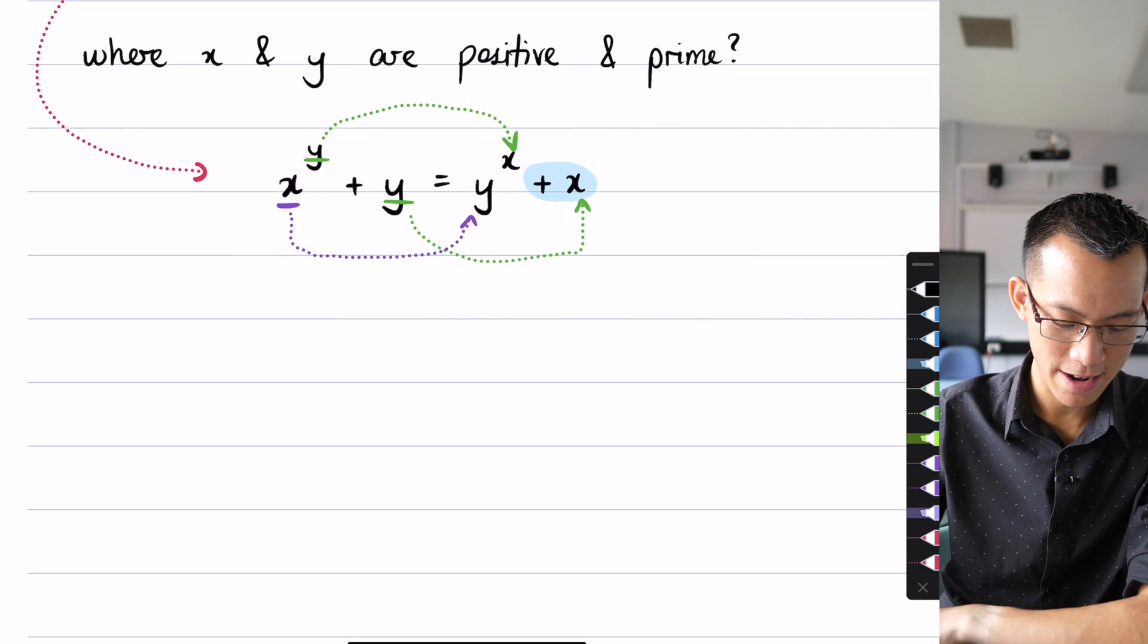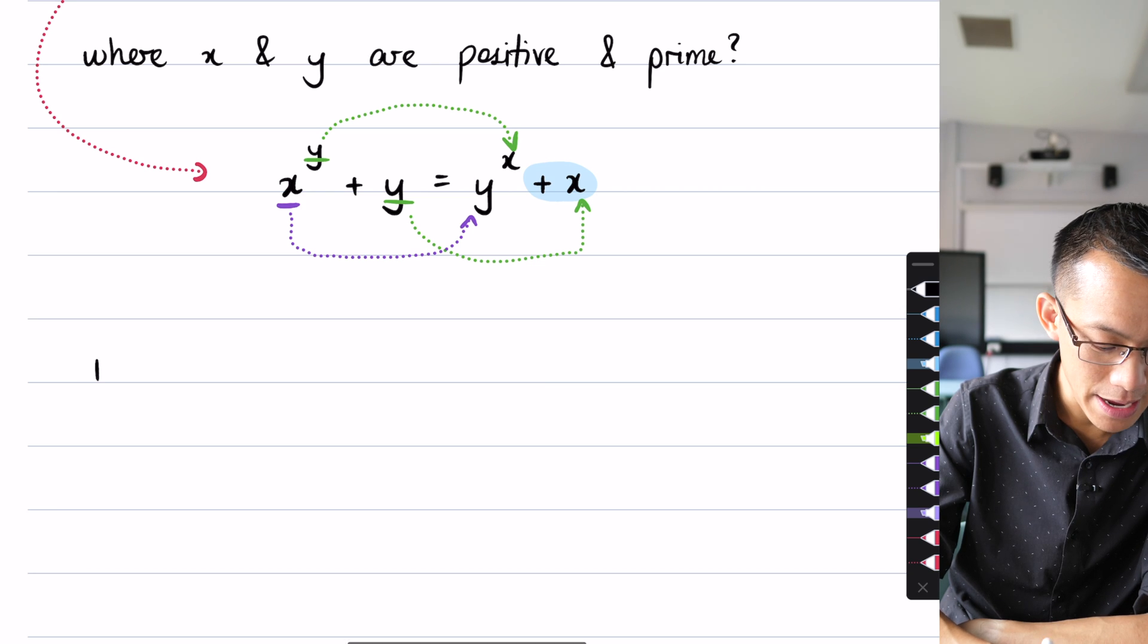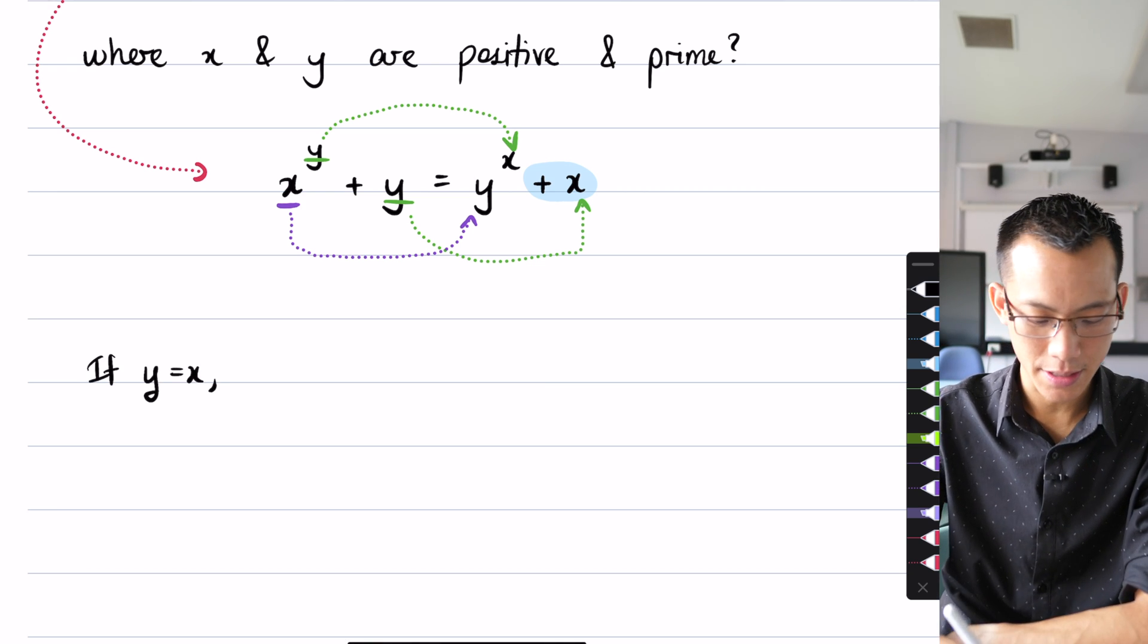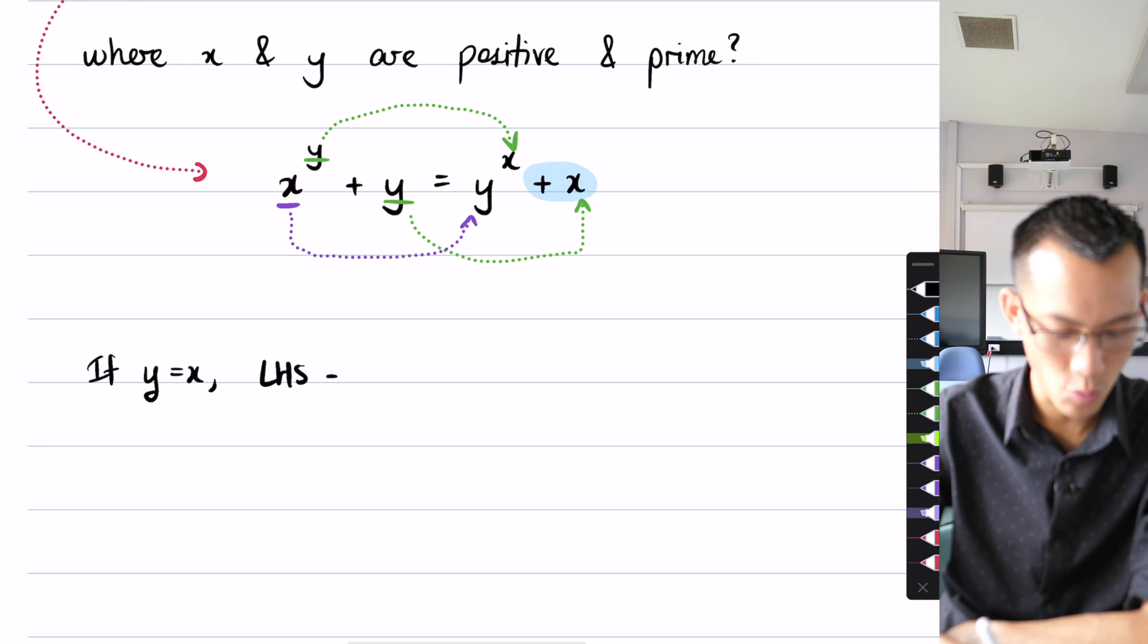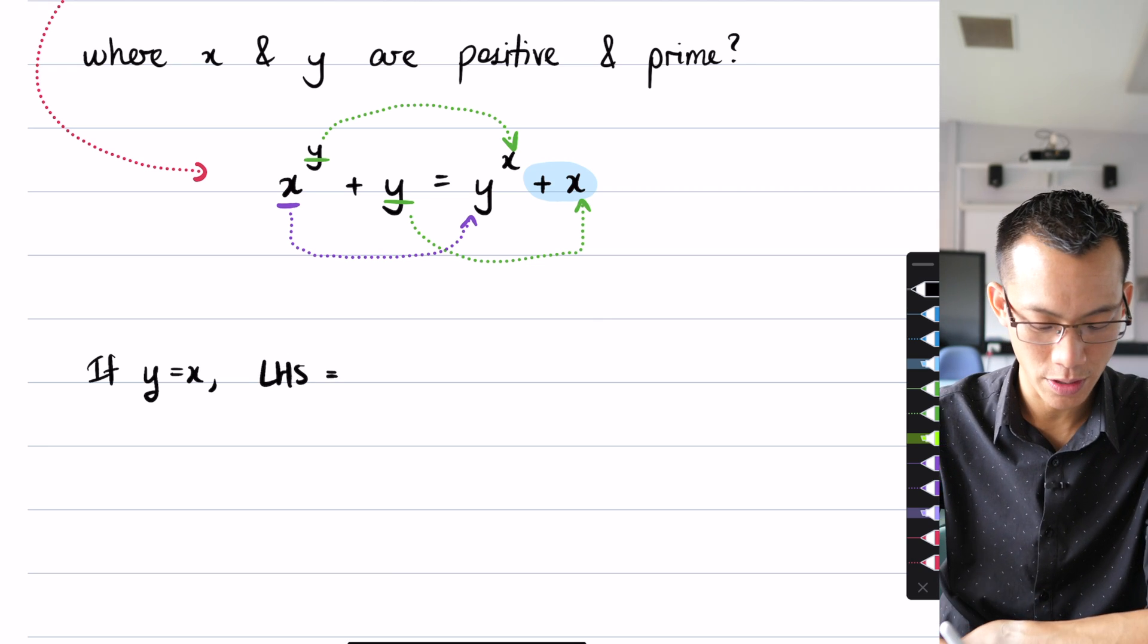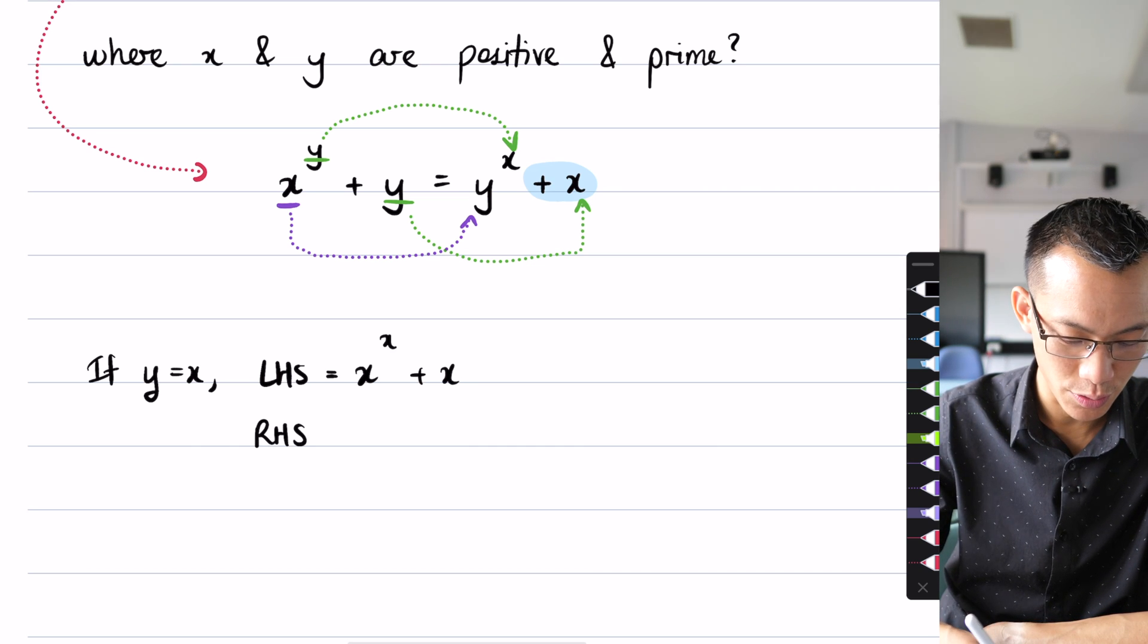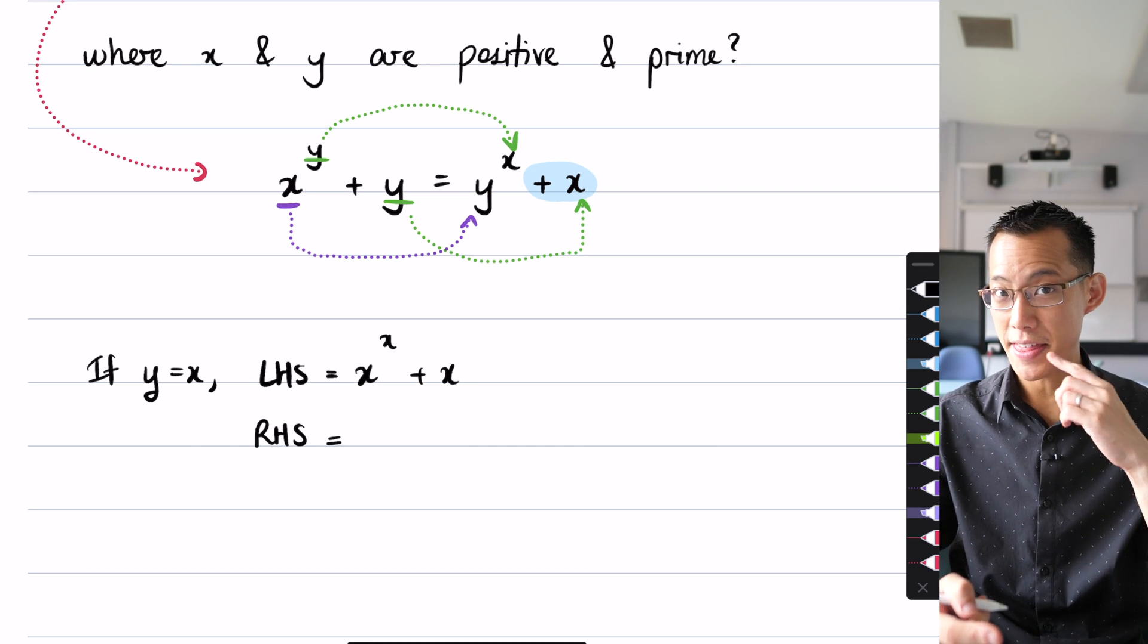Because if x and y are symmetrical like this then if x and y happen to be equal to each other, if y equals x, then the left-hand side is going to be, every y I'll replace it with an x, so you get x to the x plus x.